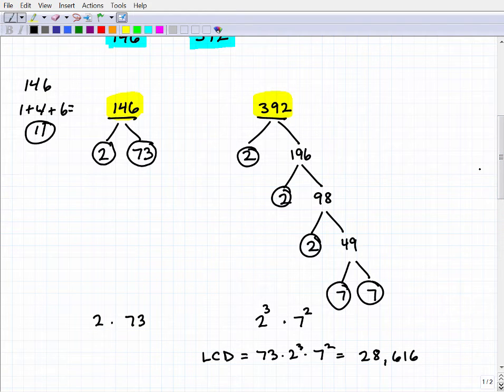We have the prime factorization from 146, which we can write as 2 times 73, and 392 is the same as 2 times 2 times 2, which is 2 to the third power, times 7 squared (7 times 7). So this is 392 and this is 146, but we broke them up and we're looking at these numbers in terms of their prime factorization.